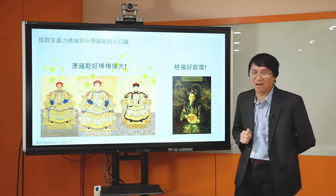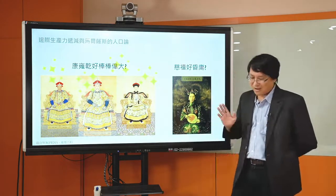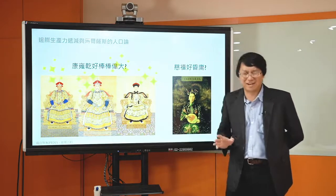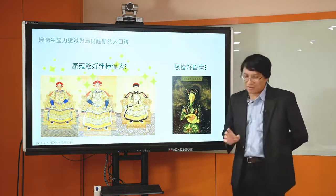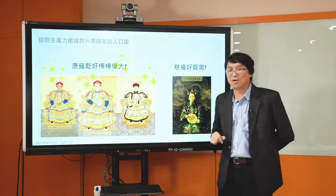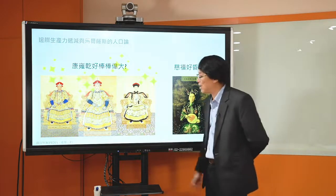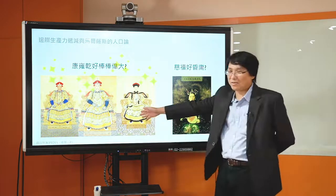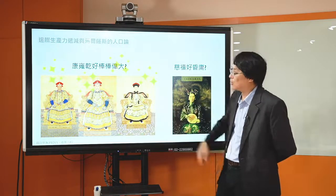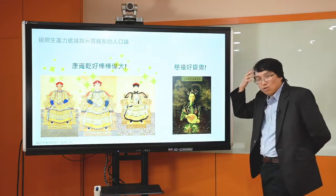我们来看看清朝。这前几年非常流行清宫剧，清宫剧通常有一个潜台词：一开始都在讲康熙、雍正、乾隆这三个皇帝的故事，潜台词是这三个皇帝英明神武，非常厉害。看清宫剧看完后你会有这样的印象。